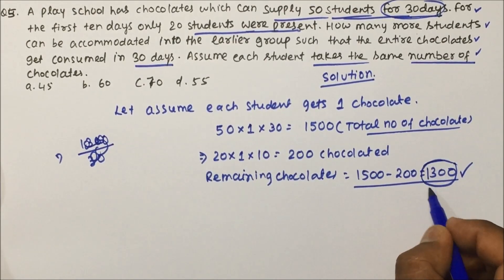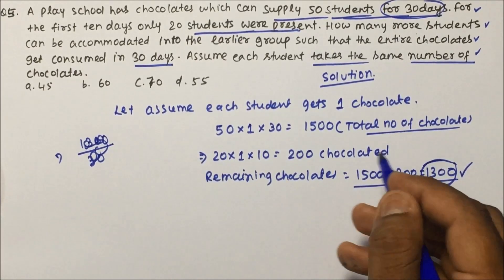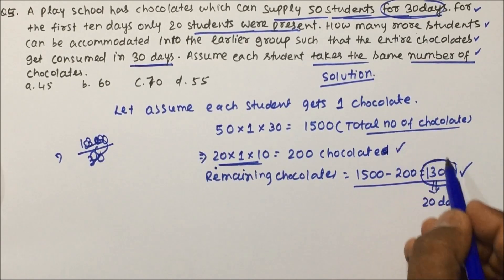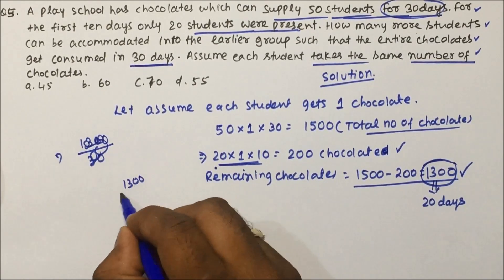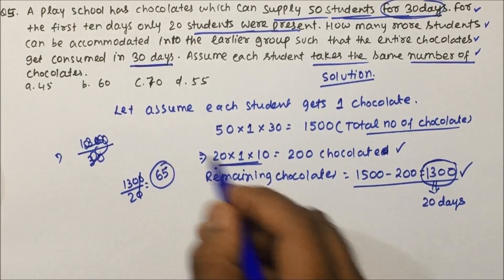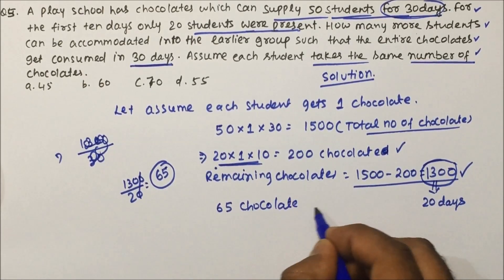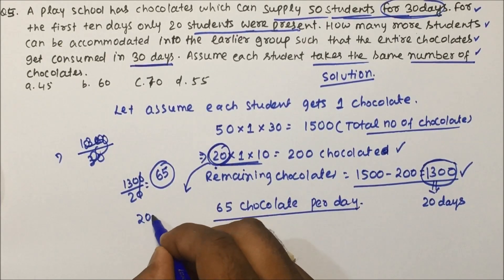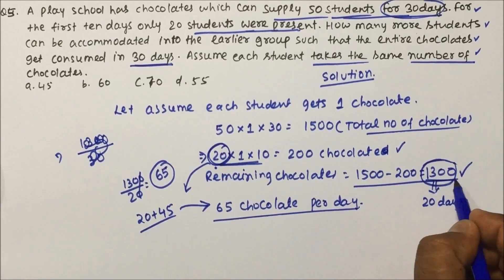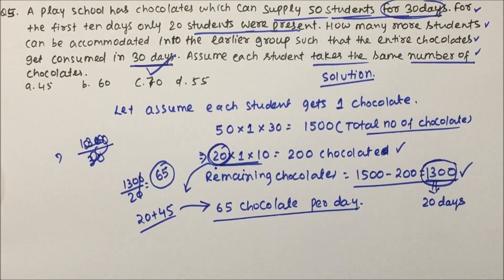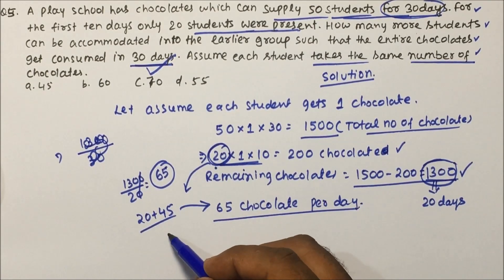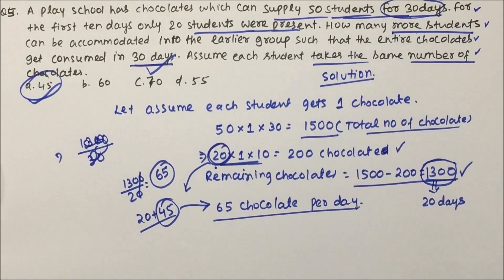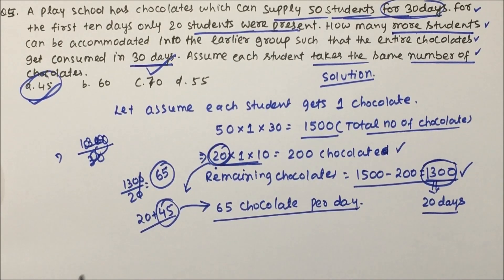The remaining 1300 chocolates must be consumed in 20 days (since 10 days have already passed). That means 1300 / 20 = 65 chocolates must be distributed per day. Currently there are 20 students, so we need 65 − 20 = 45 more students, so that all 1500 chocolates are consumed in 30 days. The answer is 45 more students.